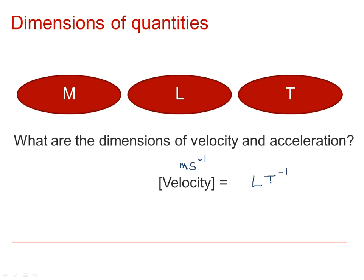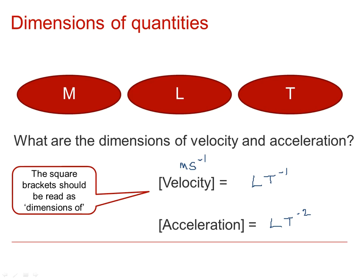So the dimensions of velocity, indicated by the square bracket, are L T to the minus one. In a similar way, for acceleration, we've got meters per second squared, or meters second to the minus two, so we've got L T minus two. The square bracket can be read as being the dimensions of.